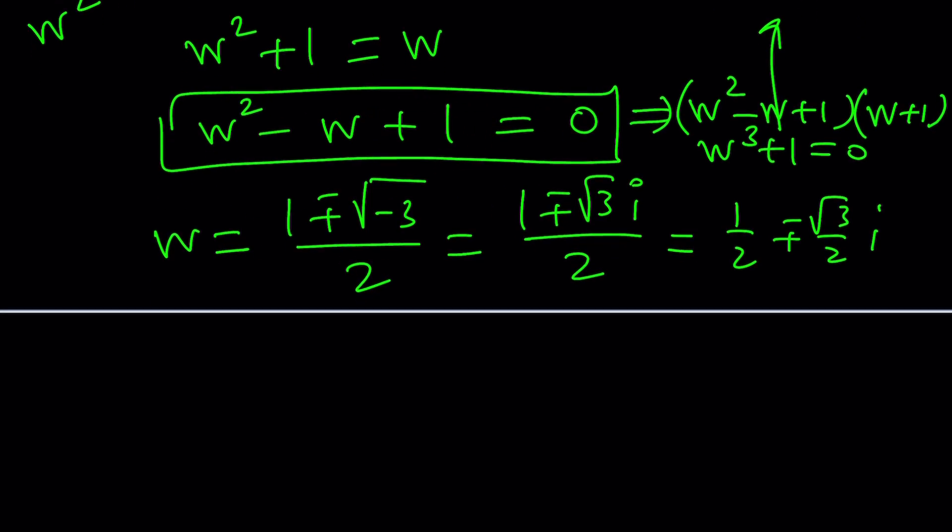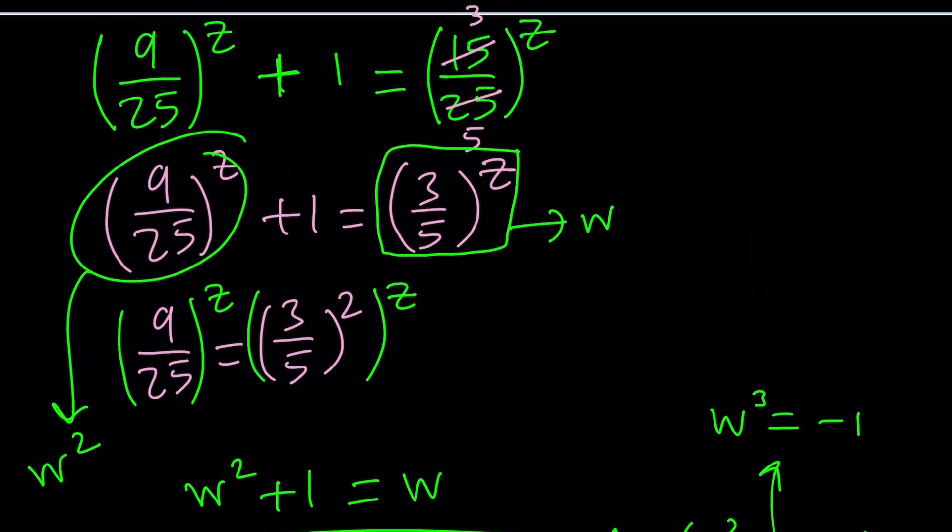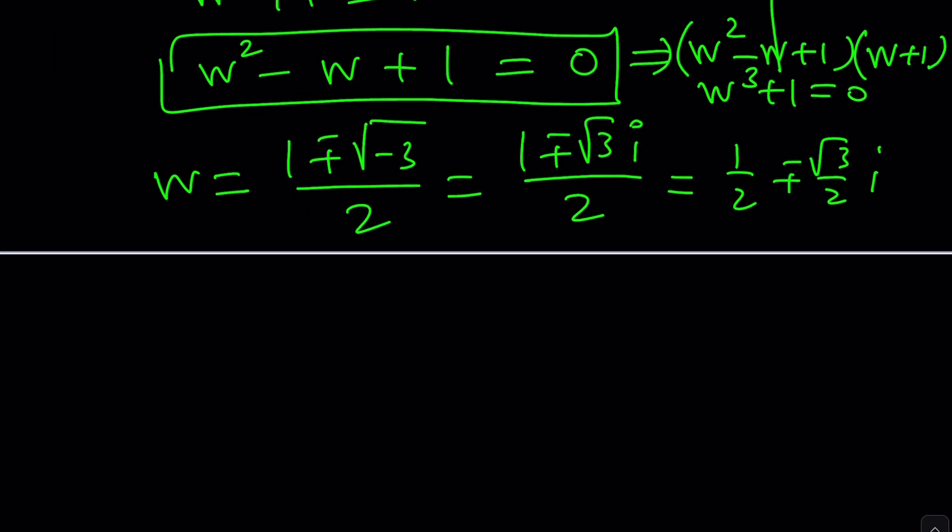So where did we go from here? Those are the values. Let's go ahead and set those values equal to W, which is 3 over 5 to the power Z. 3 over 5 to the power Z equals W. Let's just start with 1 plus root 3i over 2. You can write it this way or standard form, no big deal.